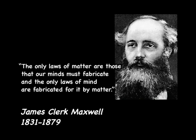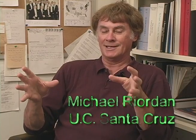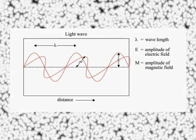When James Clerk Maxwell took electricity and magnetism — which were thought to be two different forces back in about 1860 — and came up with a theory that put them together in electromagnetism, one result of that theory was that he could predict a disturbance in the electromagnetic field that traveled at the speed of light. In fact, this electromagnetic disturbance was identical to light.